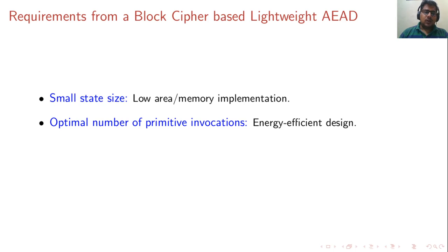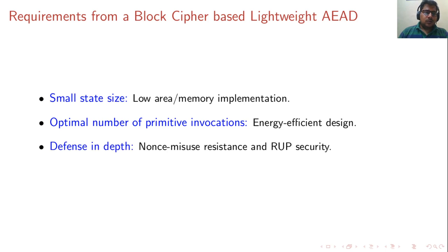The second requirement is an optimal number of primitive invocations. It is well known that the energy consumption by a cryptographic algorithm is directly proportional to the number of primitive calls it makes, so reducing the number of primitive calls reduces energy consumption as well. The third one is defense in depth — constructions that are robust even when some parameters are exploited beyond conventional means.